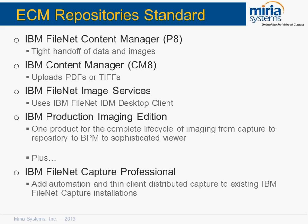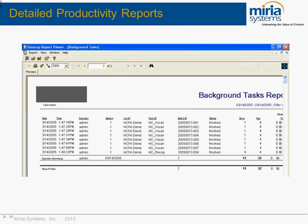Outputs go to repositories including IBM FileNet Content Manager P8, C8, IES or Image Services, Production Imaging Edition, as well as FileNet Capture Professional. There's also detailed reporting — you can get reports at a high level showing how many batches are coming through, the size of batches, number of documents, when they arrived, how long they've stayed in a queue, as well as scan station or document-level statistics showing who's done how many verifications today.